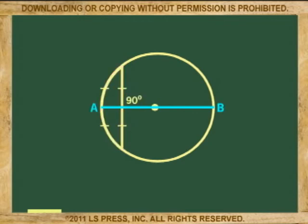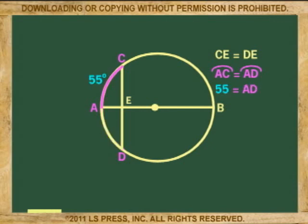So if diameter AB is the perpendicular bisector of chord CD, then CE equals DE, and arc AC equals arc AD. So if arc AC is 55 degrees, then arc AD must also be 55 degrees.